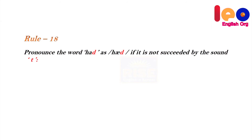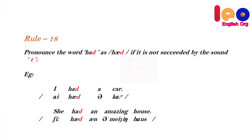Rule 18: Pronounce 'had' as 'had' if it is not followed by a 't' sound. Example: 'I had a car', 'she had an amazing house'.